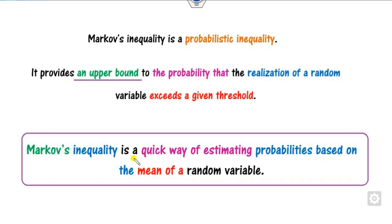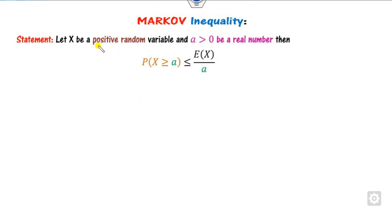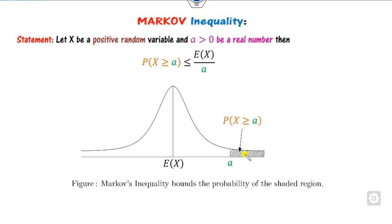Markov inequality is basically about the mean of the random variable. If you have some positive random variable X and any real number A, then P(X > A) is nothing but the expected value E[X] divided by A. Graphically, the area under the curve of the shaded portion is nothing but E[X] divided by A.